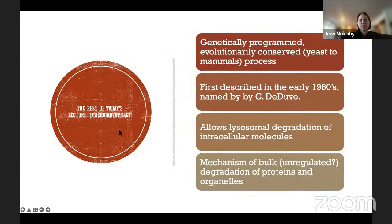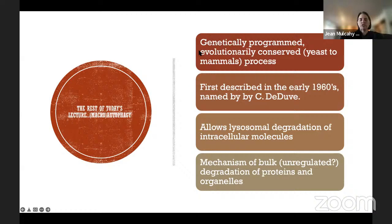Most of today's talk focuses on macro autophagy. It is genetically programmed, highly organized, and evolutionarily conserved from yeast to flies to mammals. First described in the 1960s, macro autophagy allows lysosomal degradation of intracellular molecules — for the most part it is bulk degradation of proteins and organelles, which is unregulated, picking up whatever it encounters at the time.